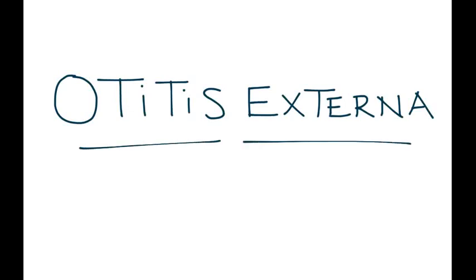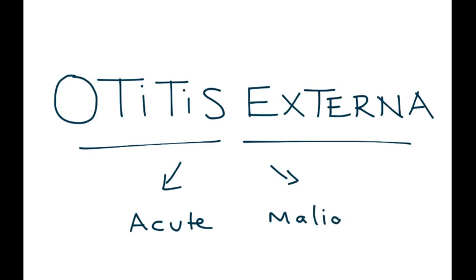Otitis externa has two types covered in this video. The first is acute and the second is malignant. The malignant type involves the temporal bone, whereas the acute type involves the ear canal.